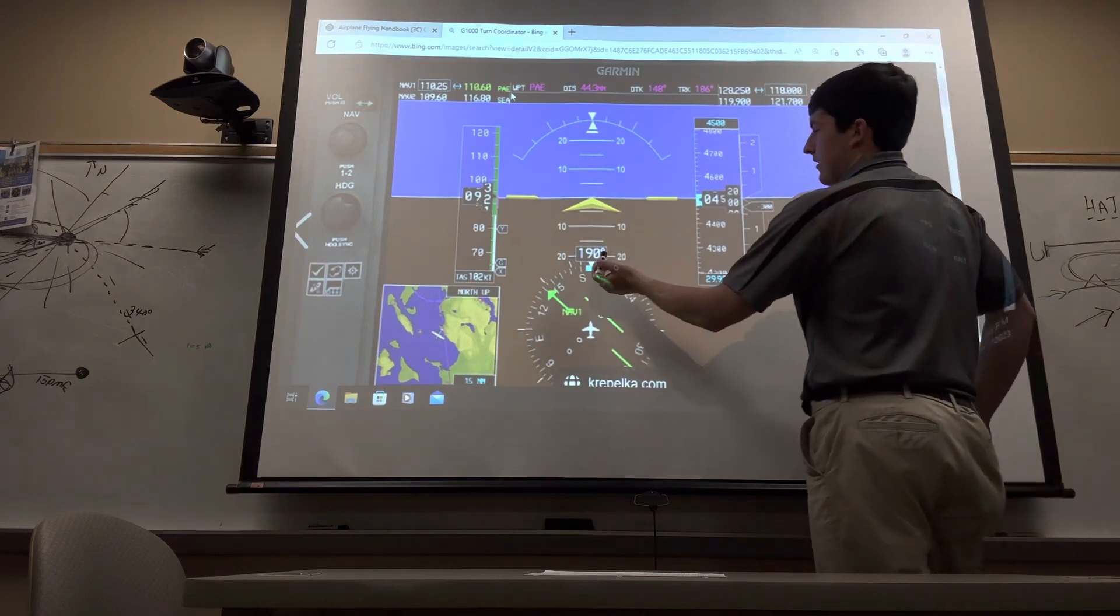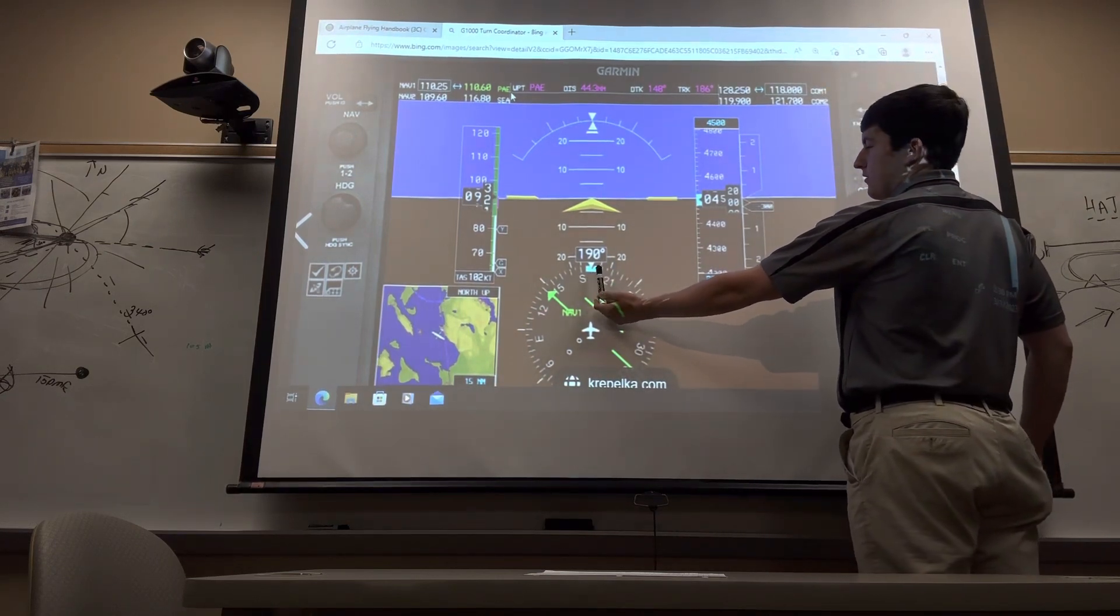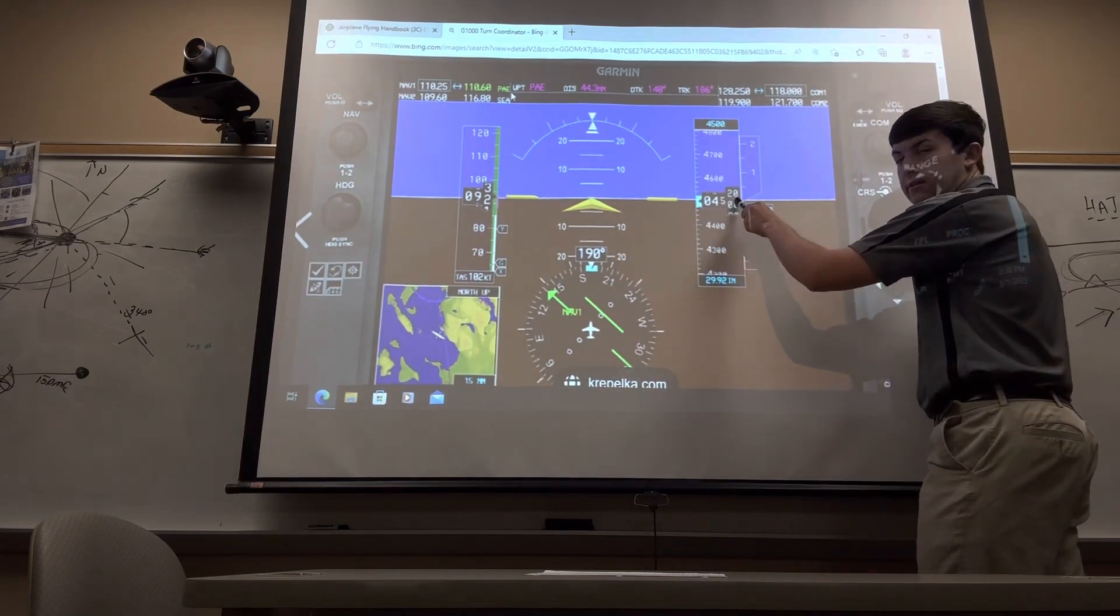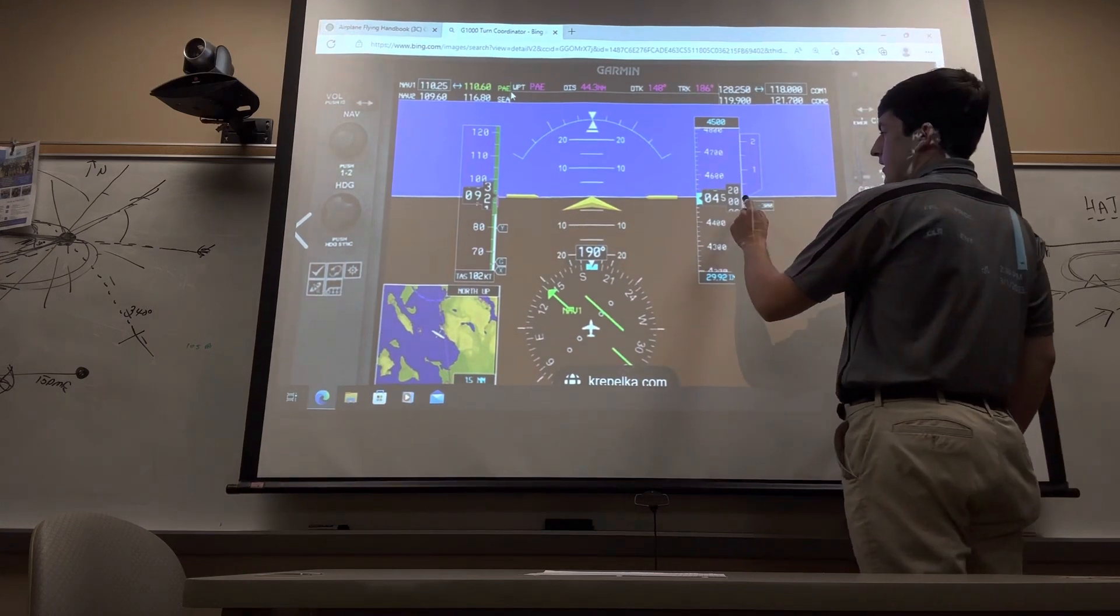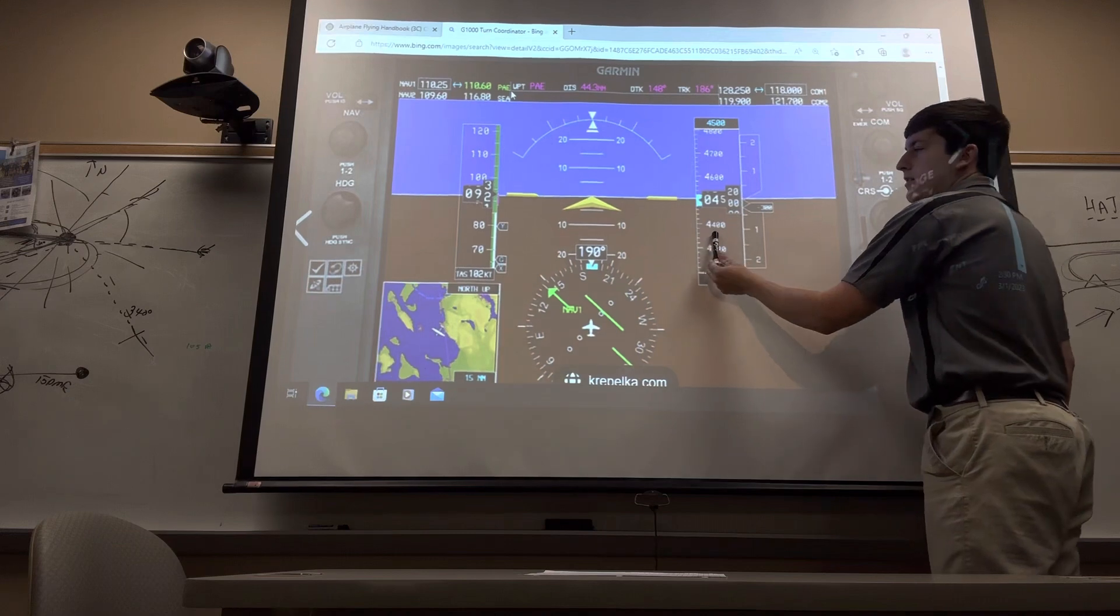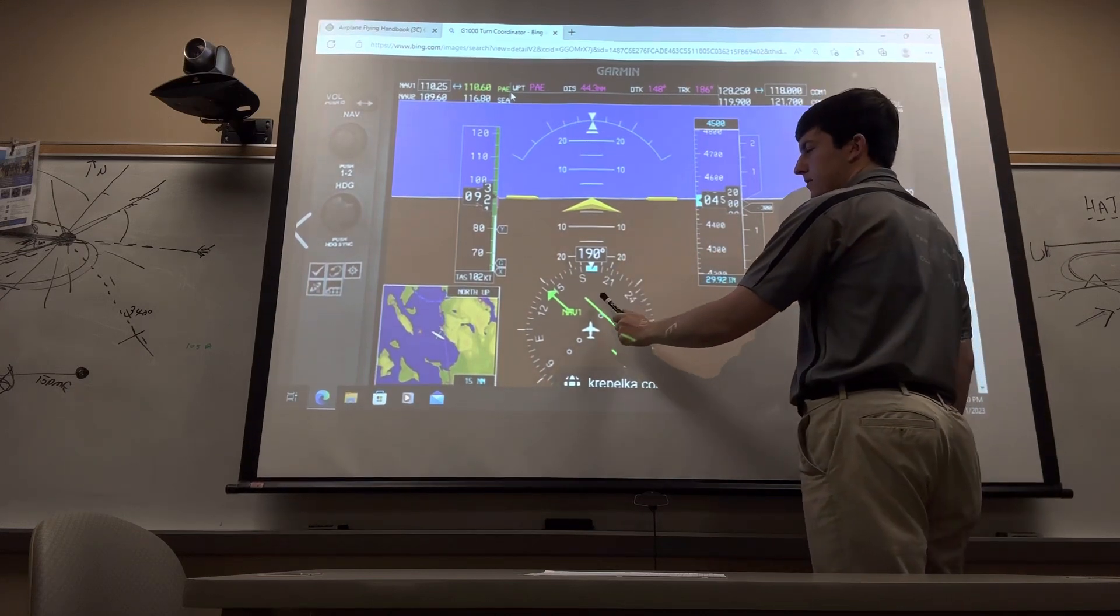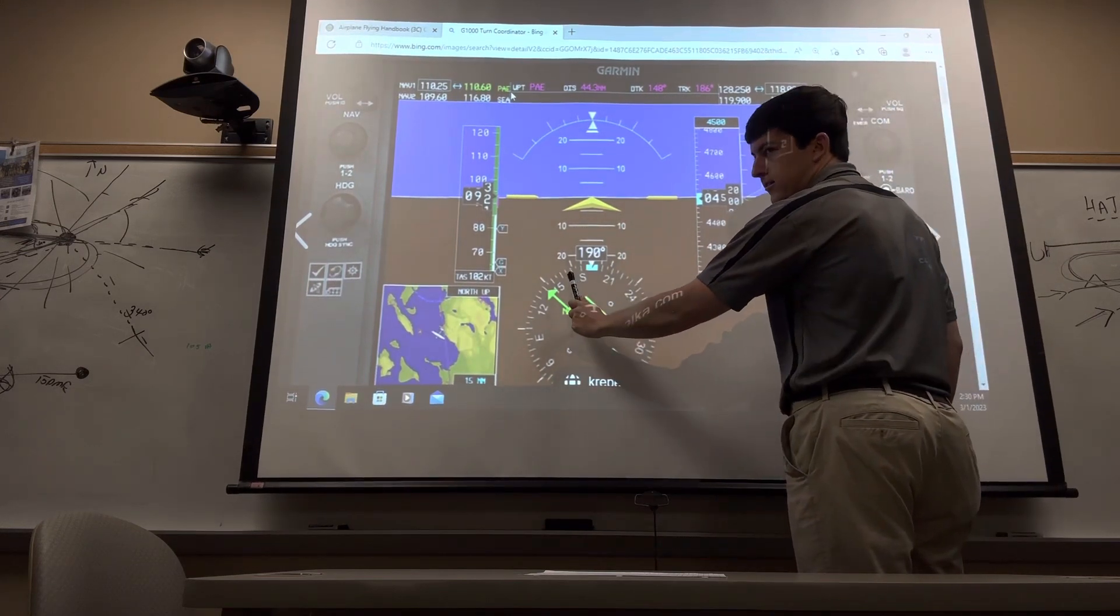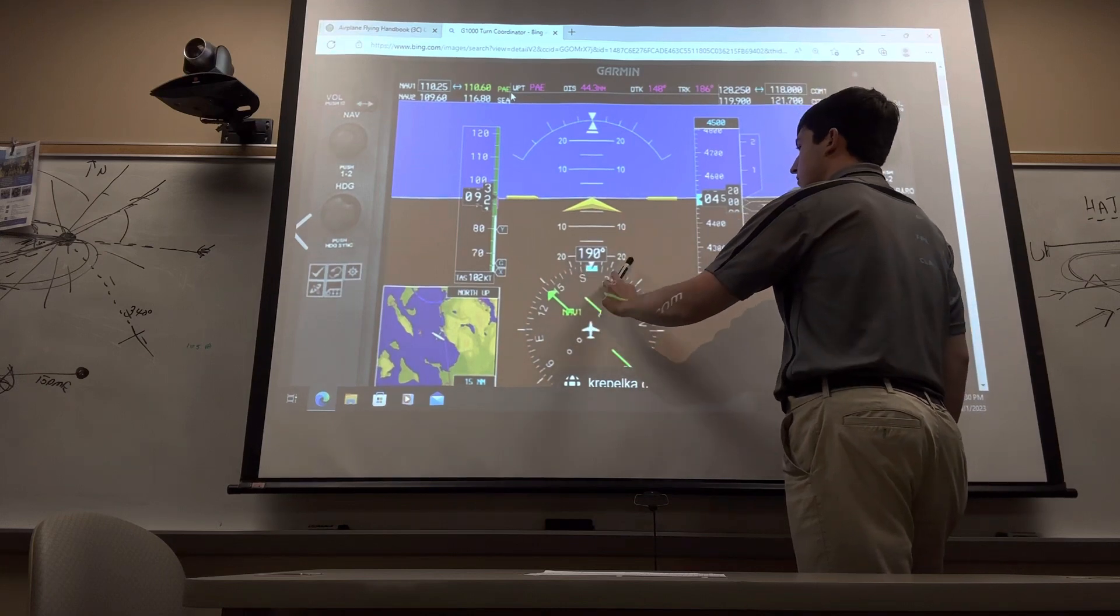In that case, they've also got 190 degrees for their heading and 4,500 feet for the altitude. They need to maintain this altitude between 4,600 and 4,400, and then they need to roll out from this steep turn between 180 degrees, or facing south, and 200 degrees.